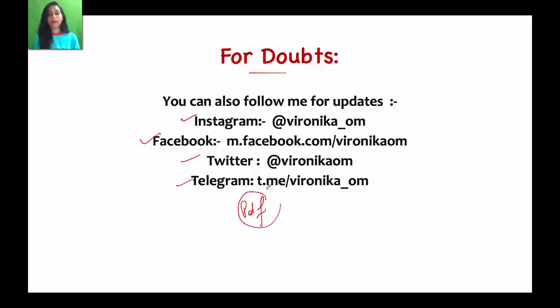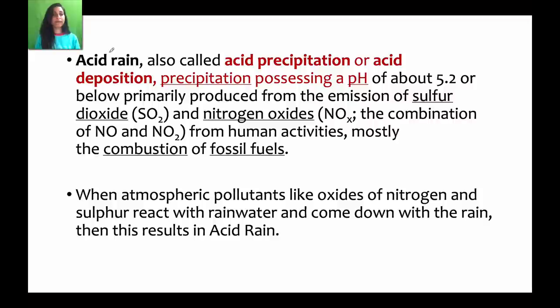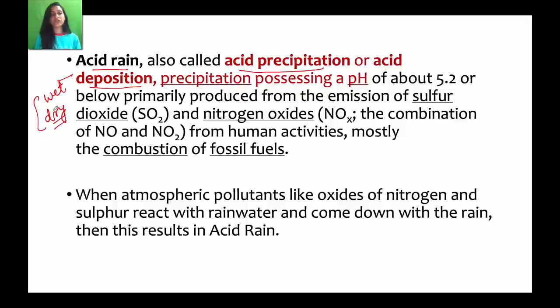Acid rain, which we also call Acid Precipitation or Acid Deposition, because it precipitates in the form of rain or snow — that is wet deposition — or in dry form. Acid Precipitation or Acid Deposition possesses a pH of about 5.2 and below. Remember: the pH of acid rain is 5.2 or below.